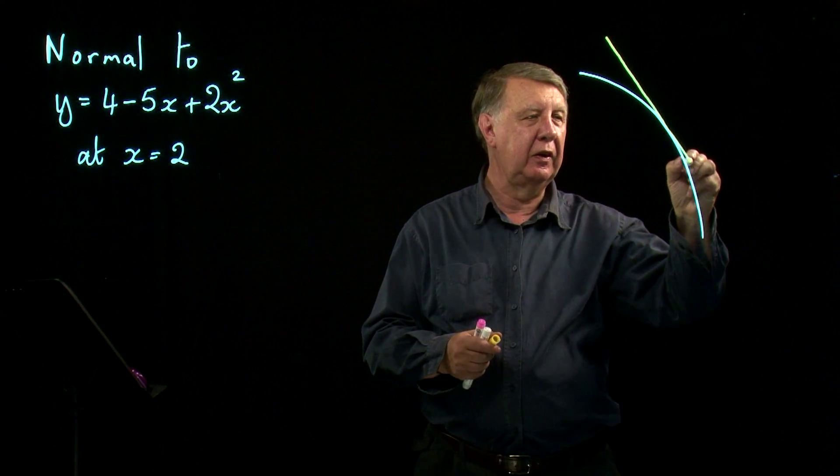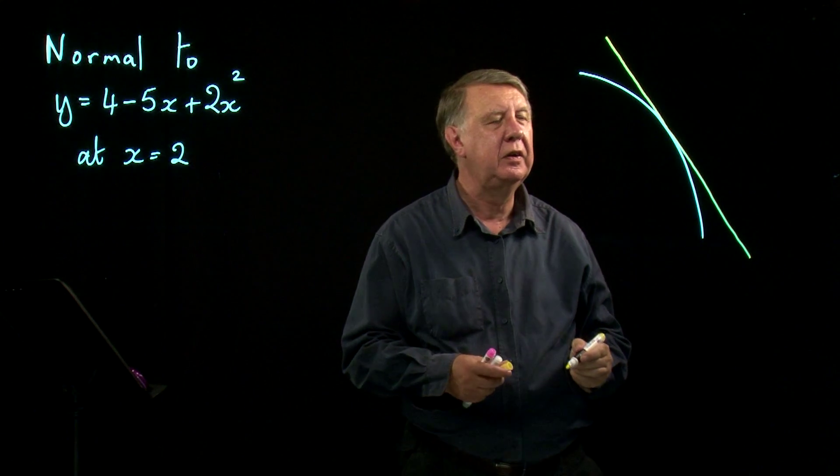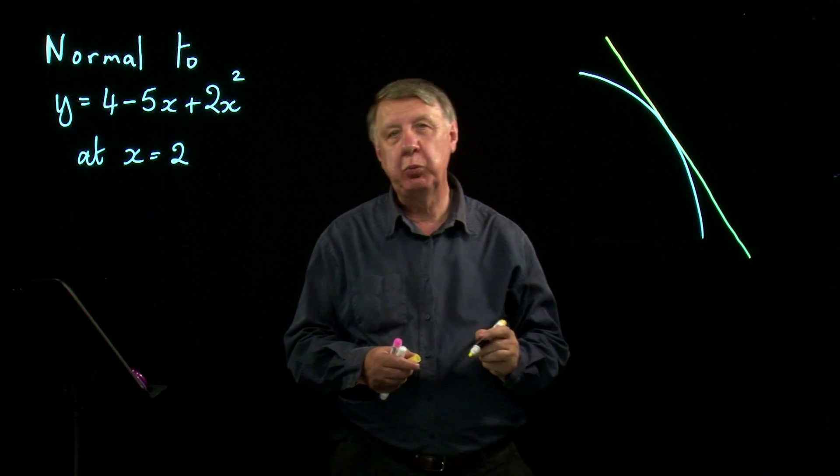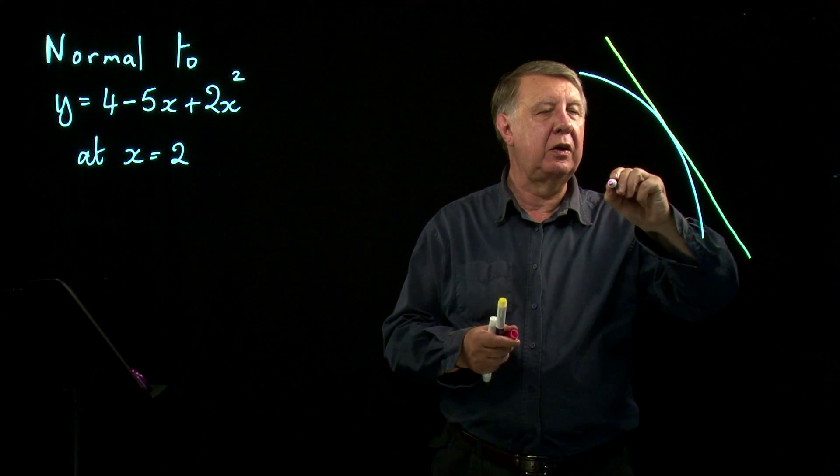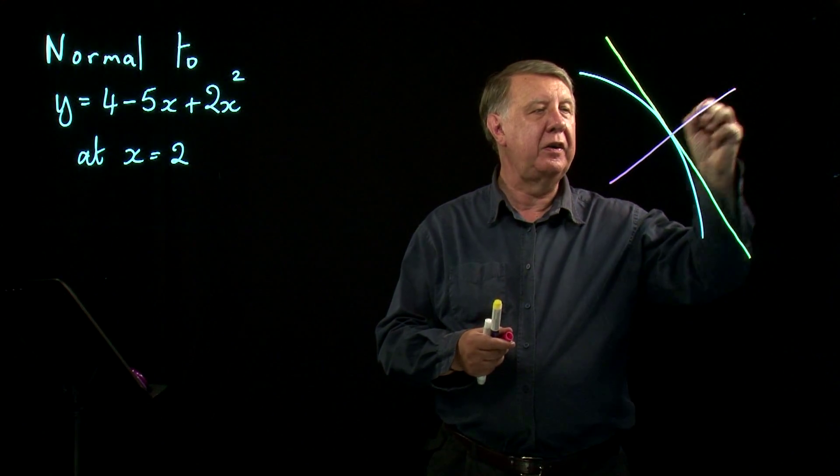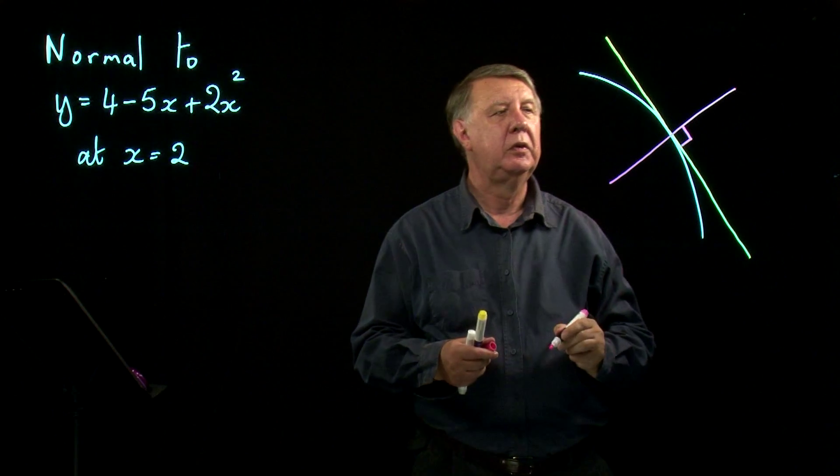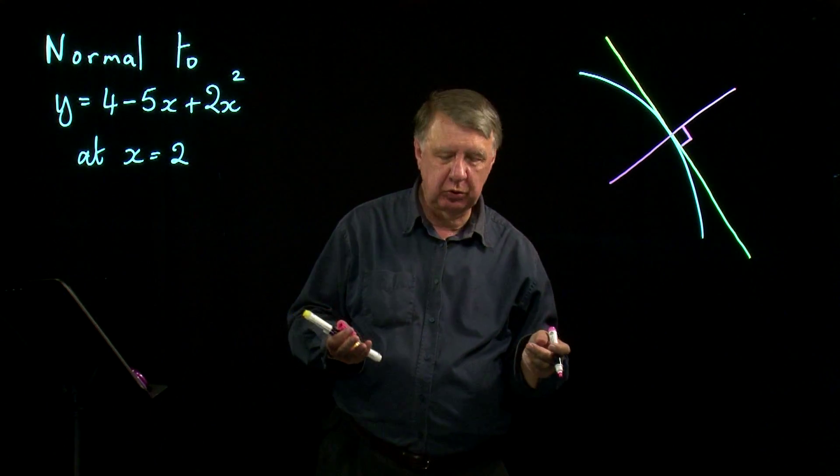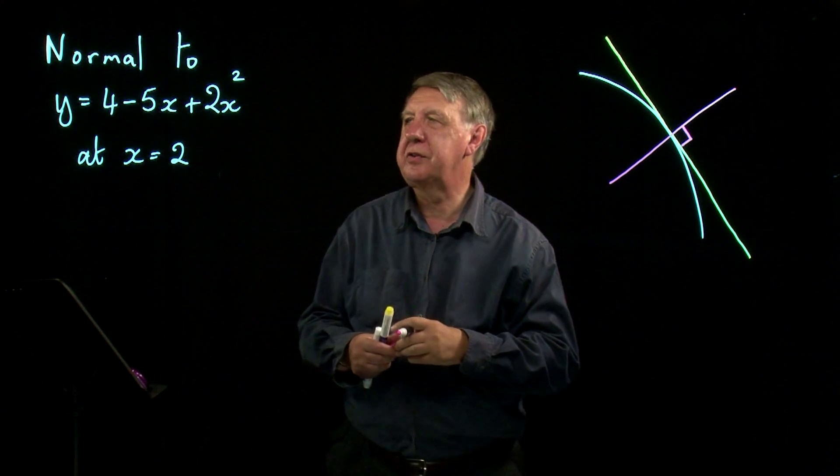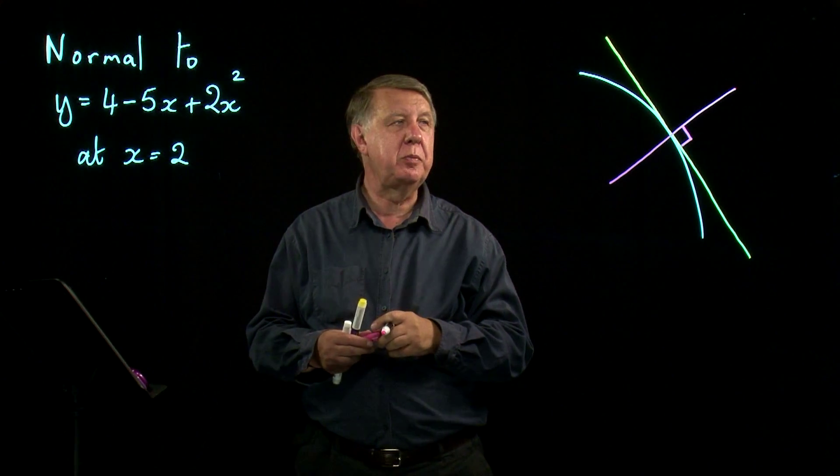There we are, there's a tangent there, just touches in one point. A normal is a line that is perpendicular to that tangent. Normals are very important concepts in science, so we need to be able to handle them.